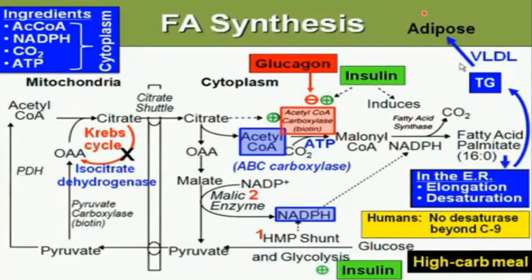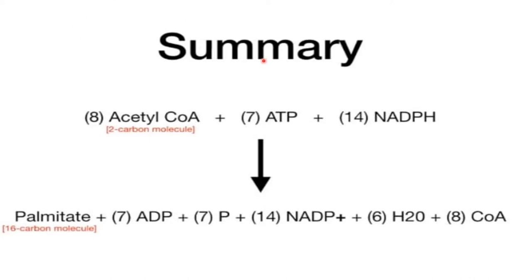The VLDL carries these triglycerides into the adipose tissue where they are stored as fat. In summary, this cycle uses 6 acetyl-CoA (a 2-carbon molecule) plus 7 ATP plus 14 NADPH to produce palmitate (a 16-carbon molecule), plus 7 ADP, 7 phosphate, 14 NADP⁺, 6 molecules of water, and 6 CoA.